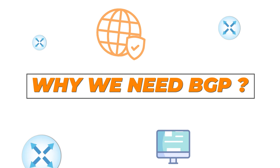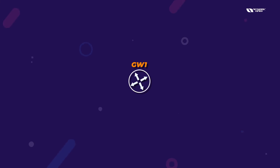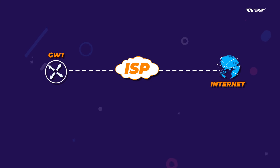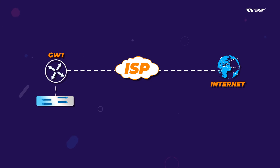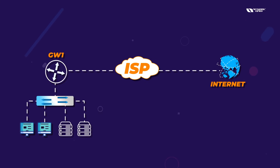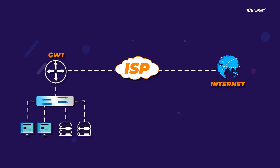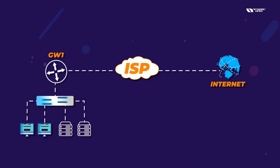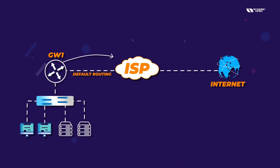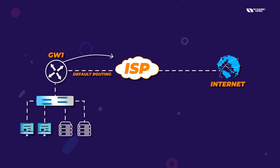Why do we need BGP? First, consider a company with only one router needing internet connectivity from a single ISP. Your LAN has computers and servers as your internal network. In this case, you only need normal routing — specifically default routing — since you have just one connection to the ISP.